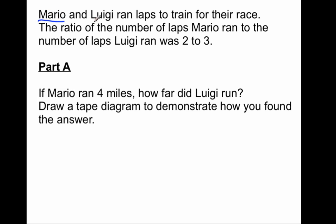Mario and Luigi ran laps to train for their race. The ratio, and again, ratio is the ordered pair of non-negative numbers that can be used to describe the relationship between two quantities, and order is important. So, the ratio of the number of laps Mario ran to the number of laps Luigi ran was 2 to 3. Mario to Luigi is 2 to 3, 2 units to 3 units. I've modeled this entire problem with this statement right here, 2 to 3, which stands for Mario's laps to Luigi's laps.